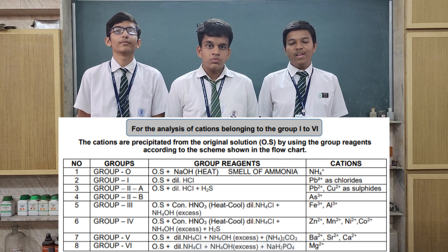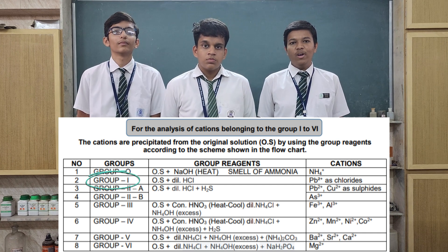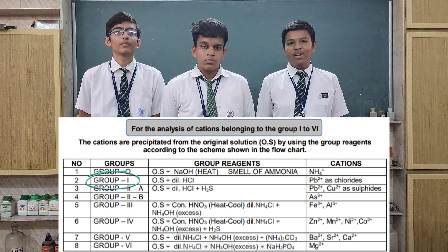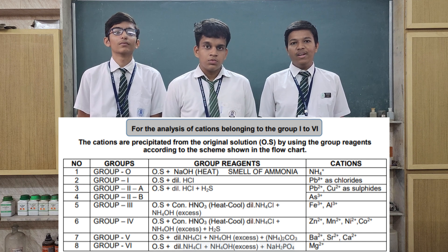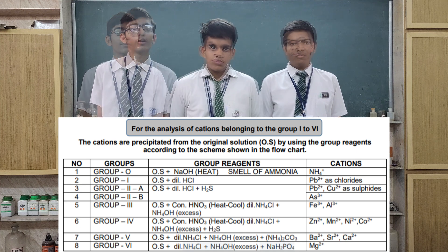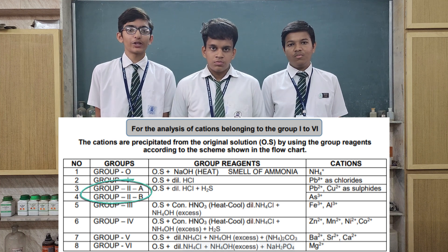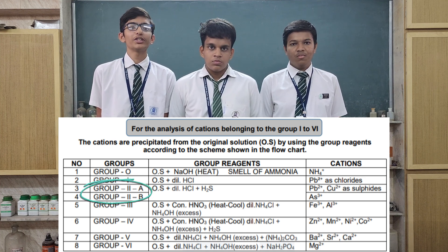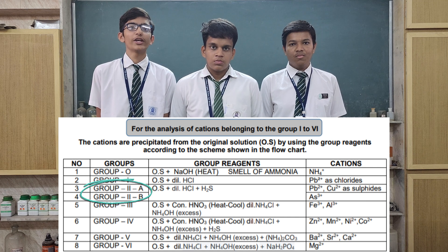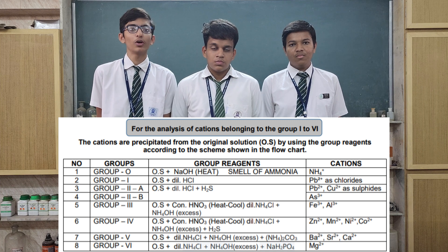If Group 0 is absent, then perform the Group 1 test, which is the solution plus dilute HCl. If no precipitate, then perform the Group 2 test. If Group 1 is absent, move to Group 2, which is the solution plus HCl plus H₂S. If no colored precipitates are observed, then move to Group 3.